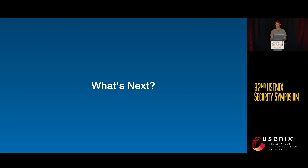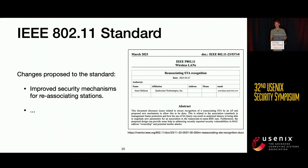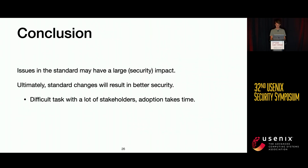Since we disclosed all of these issues, Qualcomm has proposed a change to the standard improving how re-associating clients connect to the network — adding more defenses covering client reconnection, including legitimate scenarios such as roaming or reconnecting after being out of range.